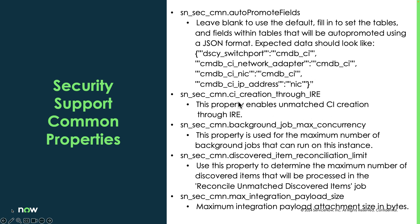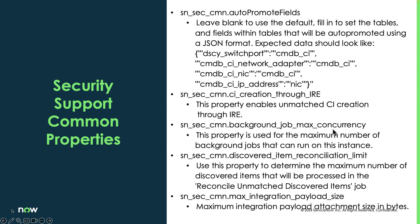CI creation through IRE is enabled by default. What this does is allow CIs to be created in the unclassified hardware class, the incomplete IP class, or the unmatched CI class. If you set this to false, everything will be created in the unmatched CI class and IRE will not be able to reclassify those. The background job max concurrency property dictates how many concurrent threads the system can use — out of the box it's 10. Make sure your instance can handle any increase; for example, you could change it to 15 threads.